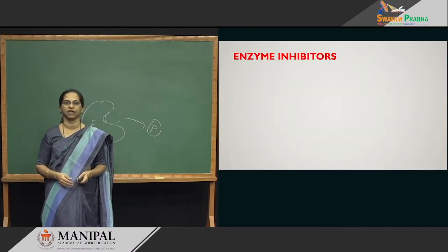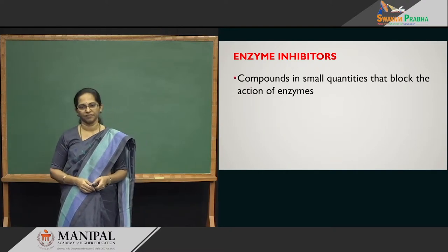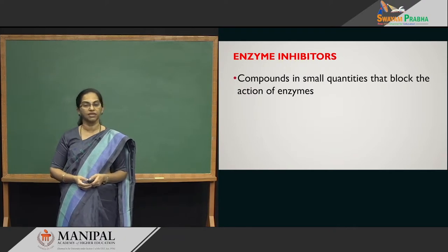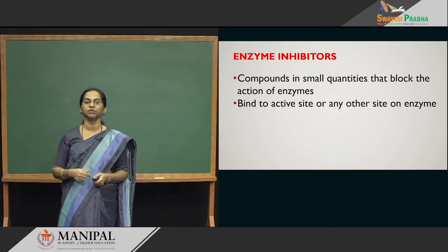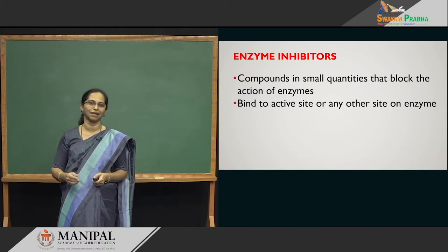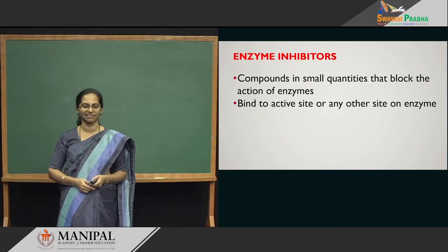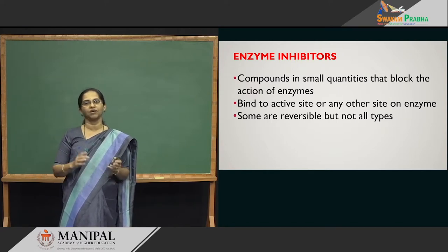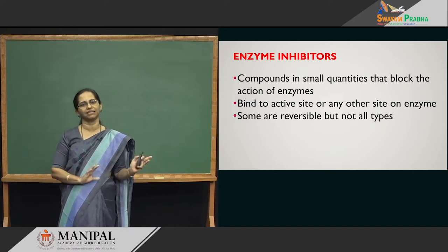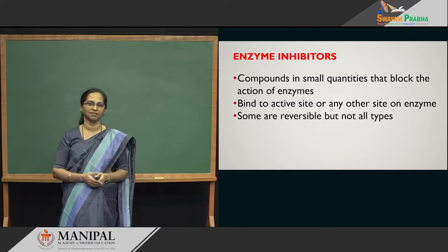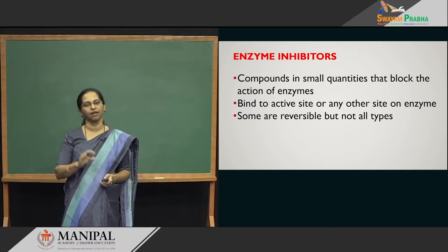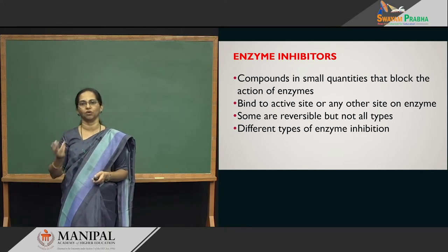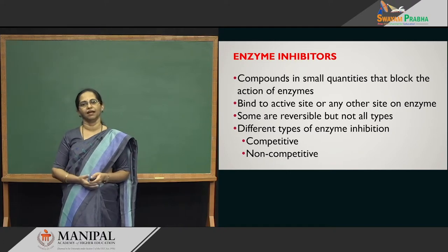Enzyme inhibitors are compounds which, even in small traces, can actually damage enzyme activity — they block the enzyme action. An inhibitor can bind to the active site of the enzyme or to some other place on the enzyme. There are two types: reversible, where you remove the inhibitor and the enzyme is fine, and irreversible, where the inhibitor totally destroys the enzyme. Depending on whether it binds to the active site or not, you have competitive inhibition and non-competitive inhibition.